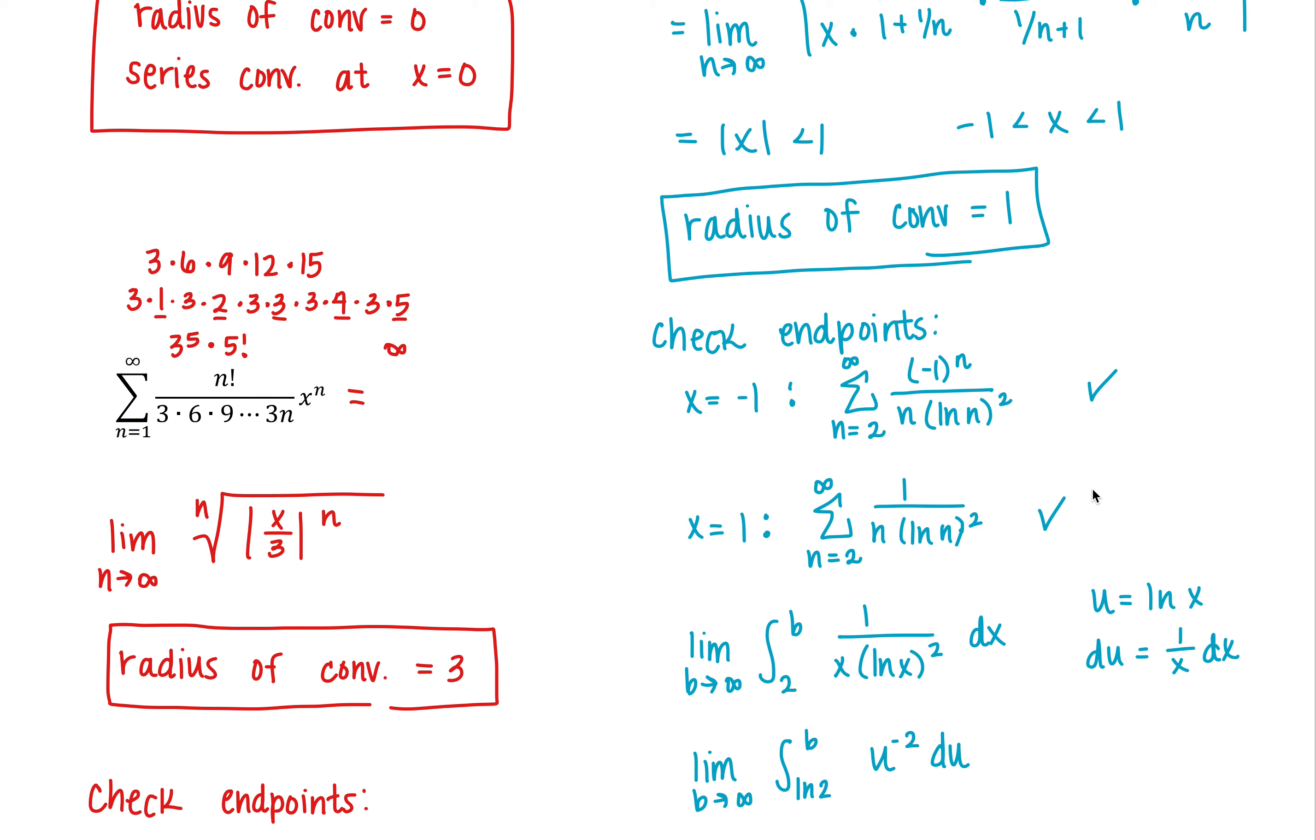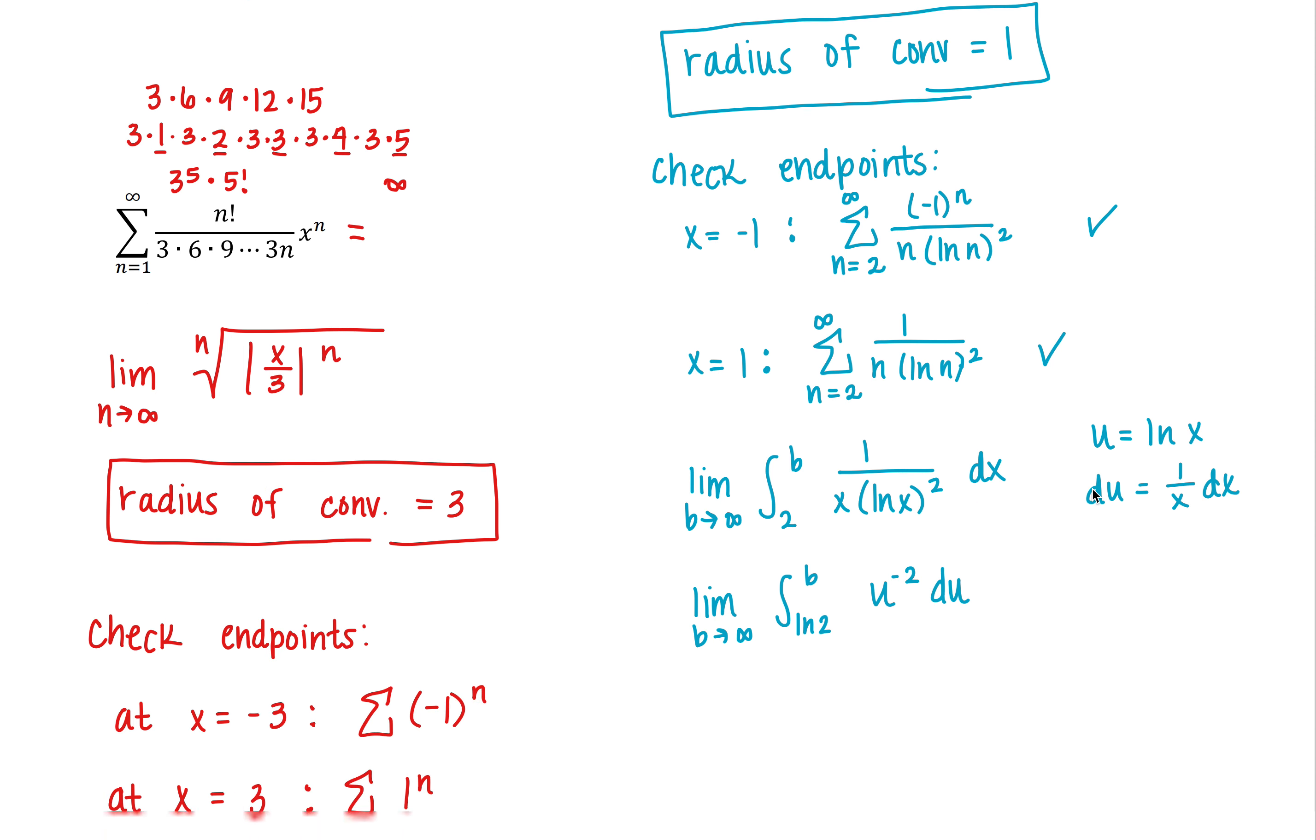So here, this is unique from some of the other ones, the series converges absolutely on the closed interval because it converges at both endpoints. It converges absolutely on the closed interval from negative 1 up to positive 1. So let's get that written. And there we go.